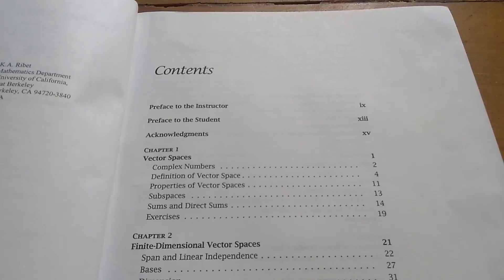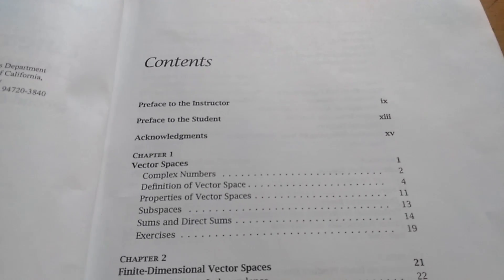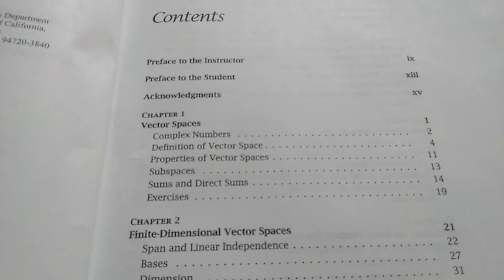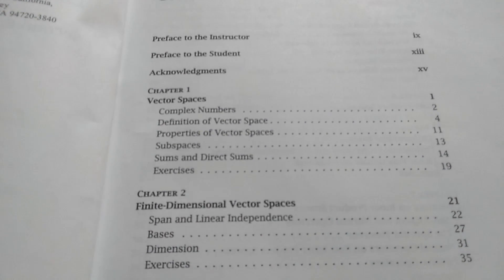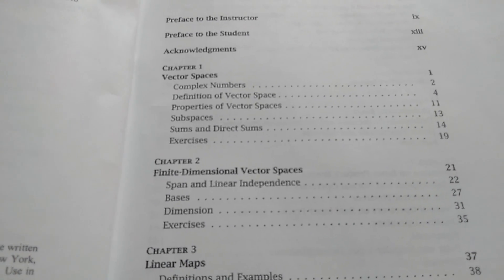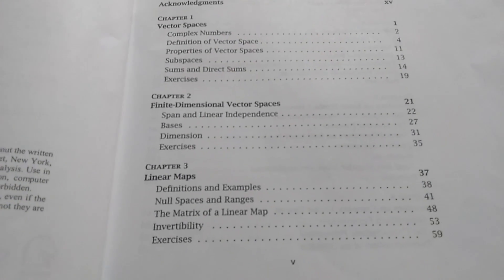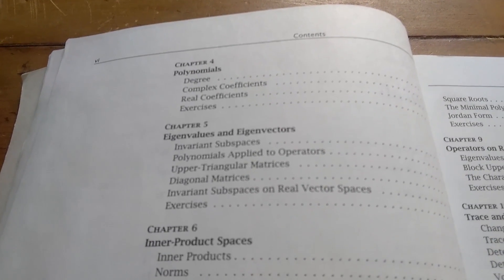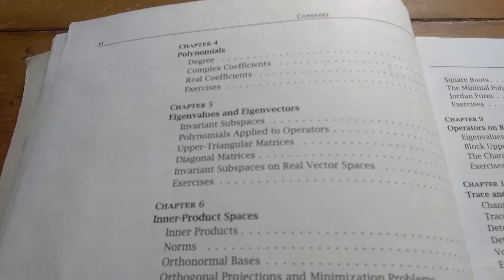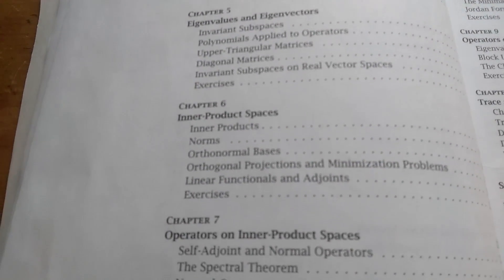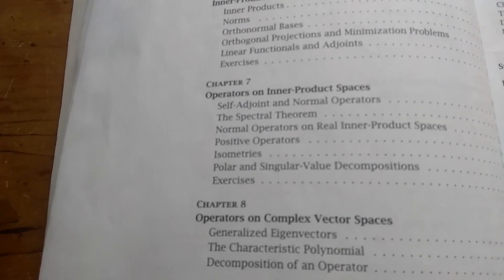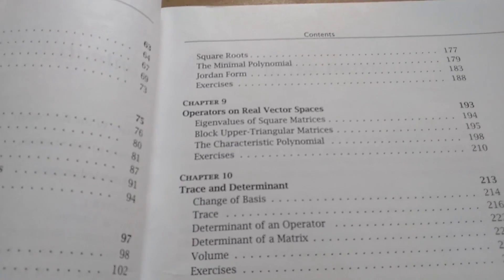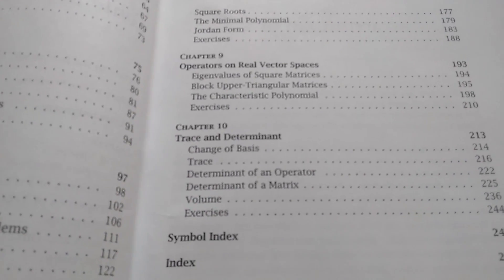So I spent some time reading this book. This is the table of contents. It starts off with complex numbers, then jumps right into vector spaces, then subspaces, sums and direct sums, and then exercises. Then it goes on to finite dimensional vector spaces, then linear maps, then polynomials, eigenvalues and eigenvectors, inner product spaces, operators on inner product spaces, operators on complex vector spaces and operators on real vector spaces.